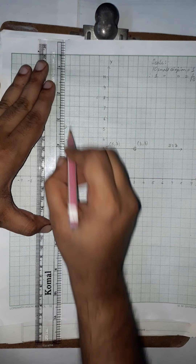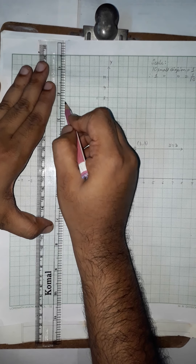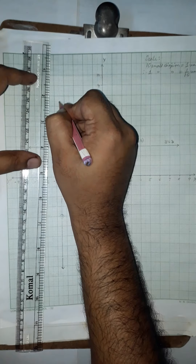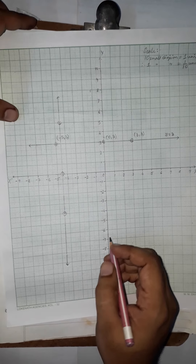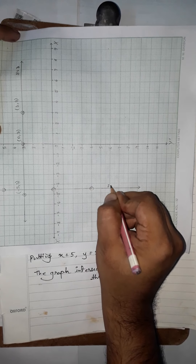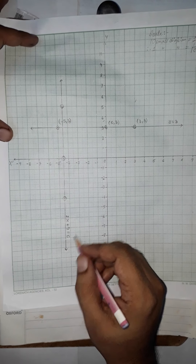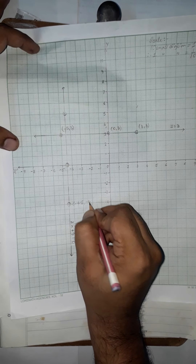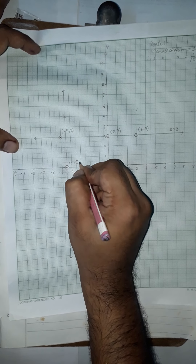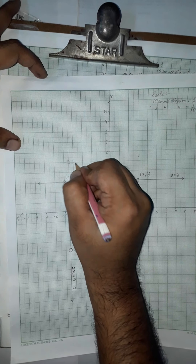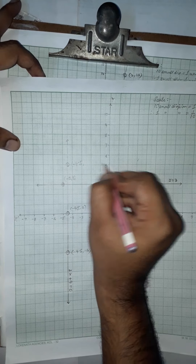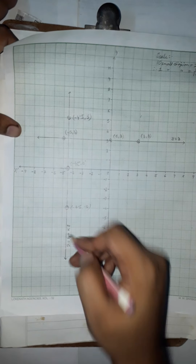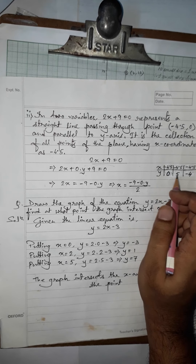These three coordinates are joined and extended on both sides to form a single straight line. This gives us the required graph for 2x + 9 = 0. The equation of this line is 2x + 9 = 0, and the coordinates on the line include (−4.5, 0), (−4.5, 5), and (−4.5, −4).